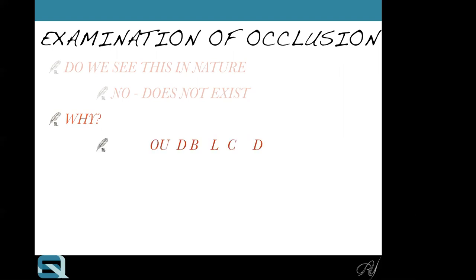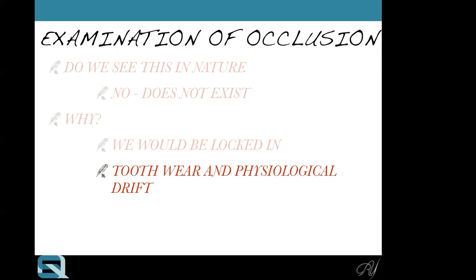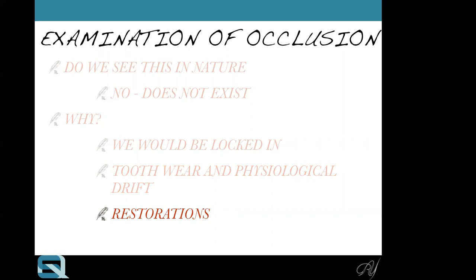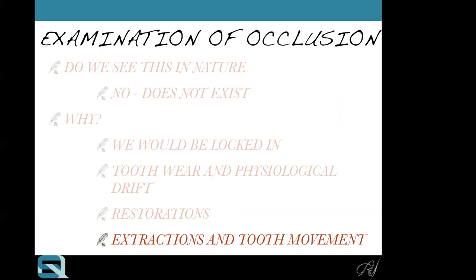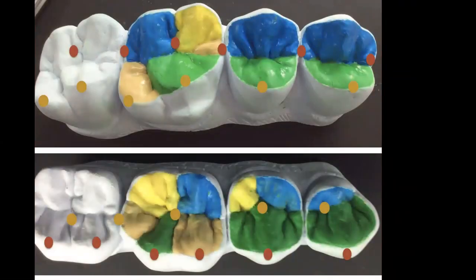If we had three-point contacts in nature, the occlusion would be fixed and locked. Teeth move through physiological mesial drift, and many restorations don't conform to the actual physiological shape of the tooth — so occlusion changes through a patient's life. As a minimum, I teach a point contact: at least one point contact from each supporting cusp into either a fossa or marginal ridge. The buccal cusp of the four sits on the mesial marginal ridge of the upper four and distal ridge of the three, and the red dots correspond across the opposing arch.